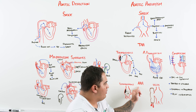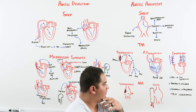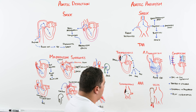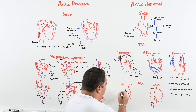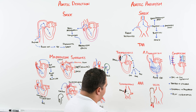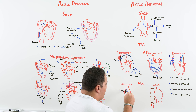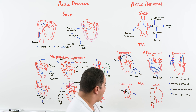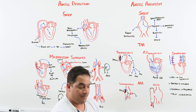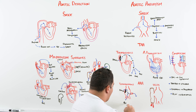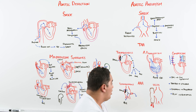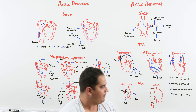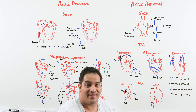For triple A (AAA), the most concerning feature is shock with abdominal/back pain, pulsatile mass, etc. But stasis in the dilated segment also creates thrombus opportunities — pieces can break off and embolize via the mesenteric arteries causing acute mesenteric ischemia with belly pain out of proportion, or down to the lower extremities causing acute limb ischemia with pain, decreased pulses, and cold limb.